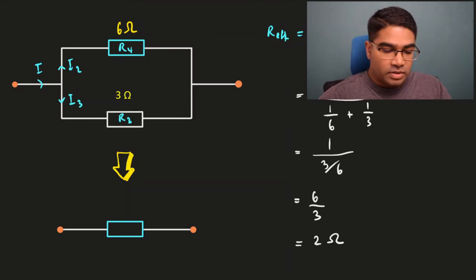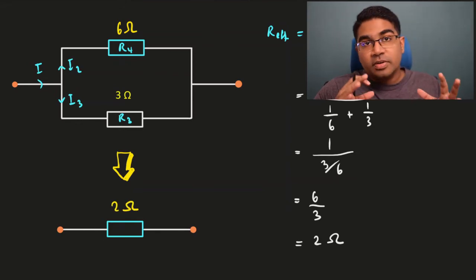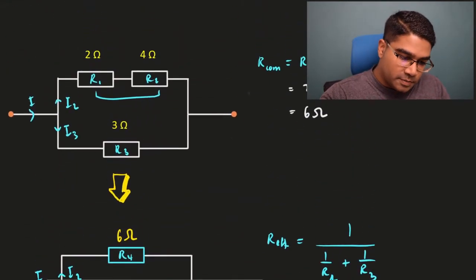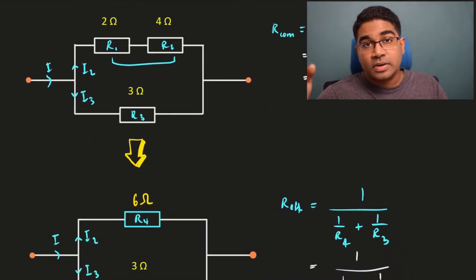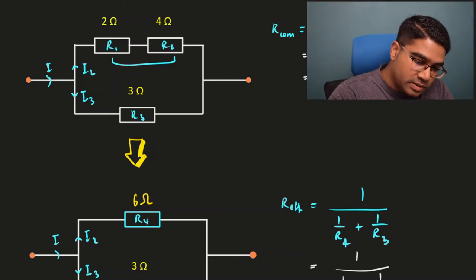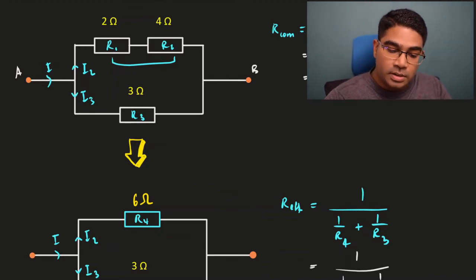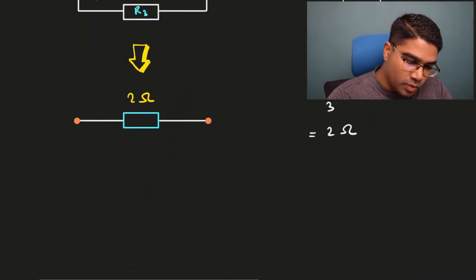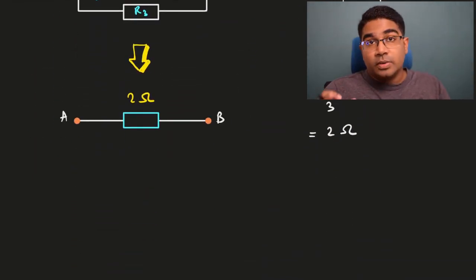So now this is simplified to 2 ohms. Let's review what we've done: we took this combined circuit with resistances connected in series as well as in parallel, and the resistance across AB can be represented by a single value of 2 ohms. This is how we solve a combined circuit.